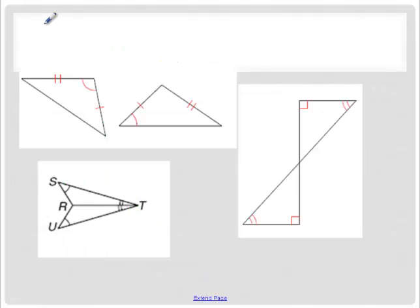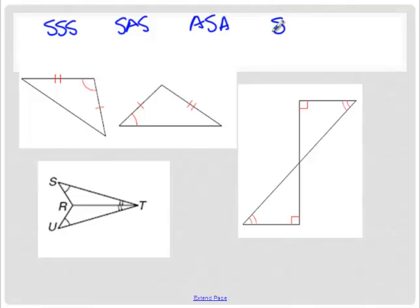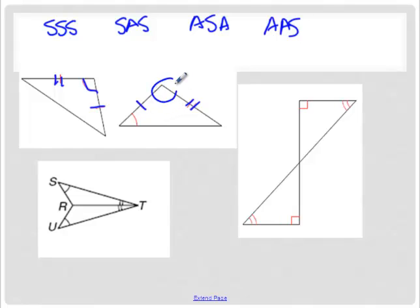Let's do the same thing again — we have SSS, SAS, ASA, and AAS. Looking over here, we have an angle and an angle with a side in between. But it has to match for SAS — we'd need the angle in between the two sides. We don't have that angle in between, so this is none.